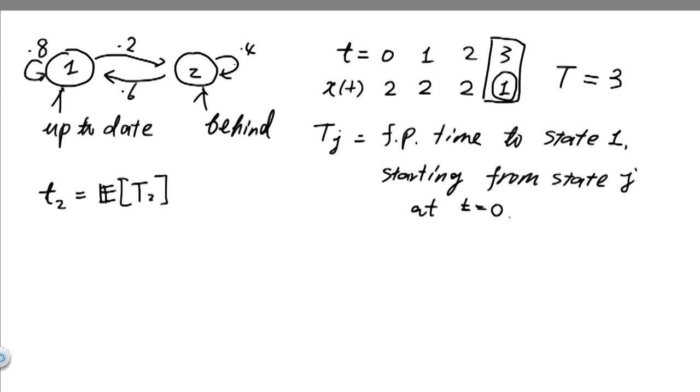And we are interested in calculating the expected value of t2. That is, on average, if we start from state two here, how long would it take for us to enter state one?